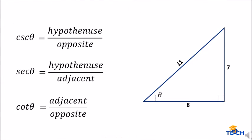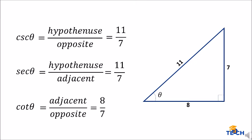Let's have an example for the reciprocals. The cosecant of this figure is 11 over 7, since it is hypotenuse over opposite. The secant theta of this figure is hypotenuse over adjacent, which is 11 over 7. And the cotangent theta is adjacent over opposite, so we have 8 over 7.